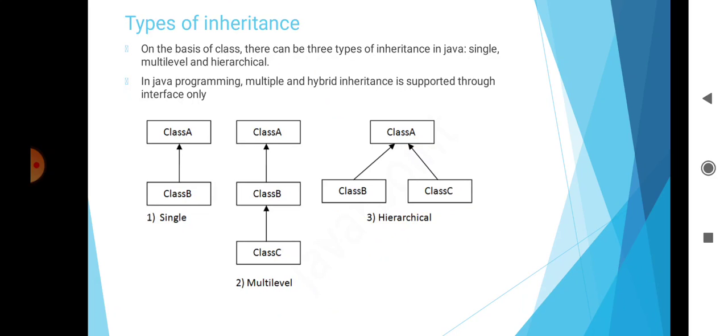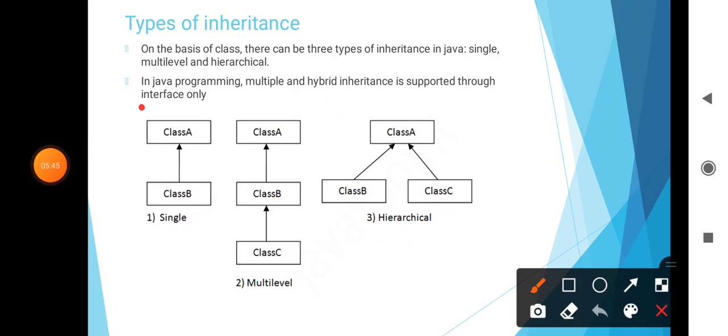Types of inheritance: On the basis of class, there are three types of inheritance in Java - single, multilevel, and hierarchical. In Java programming, multiple and hybrid inheritance are supported through interfaces only, not directly supported.